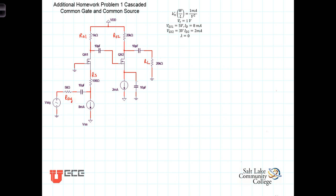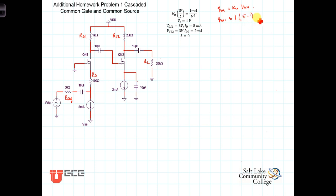We've got this circuit, and the first thing we need to do is determine our small signal model. To do that, we need to know gm1 and gm2. In general, gm equals KN times VOV. We've been given KN equal to 1 milliamp per volt squared, and the threshold voltage is 1 volt. The gate-to-source voltage on the first transistor is 5 volts, so gm1 equals 1 times (5 minus 1) = 4 milliamps per volt.